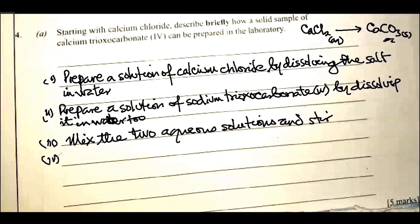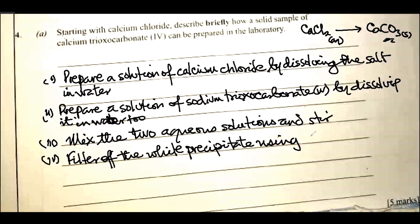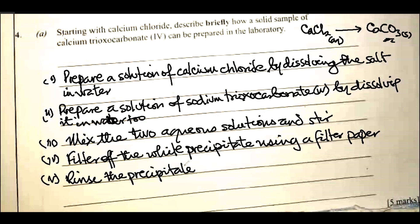There will be formation of a white precipitate. Filter off the white precipitate using filter paper. Since it's a precipitate it is not soluble, so it is fine to rinse the precipitate with water, then dry it in an oven.